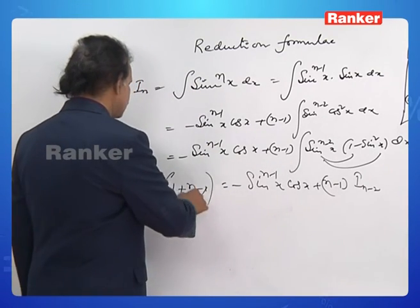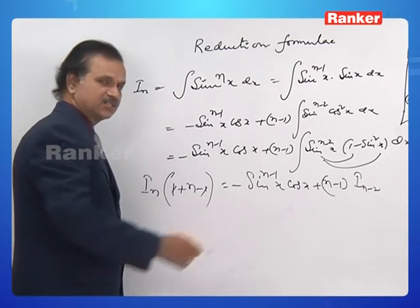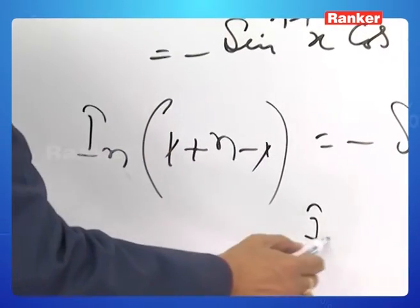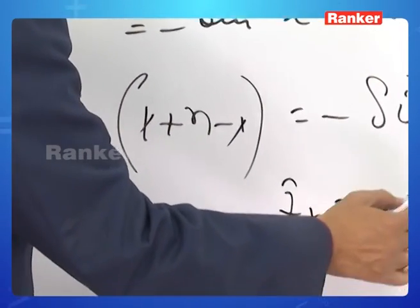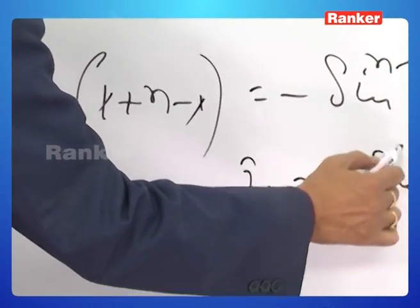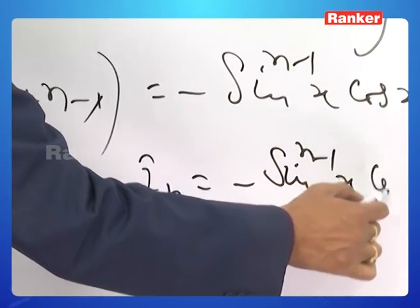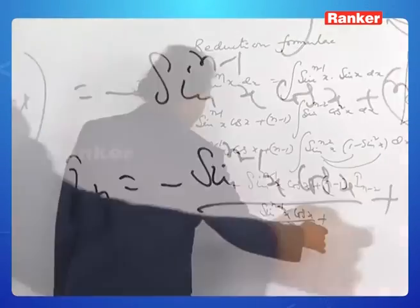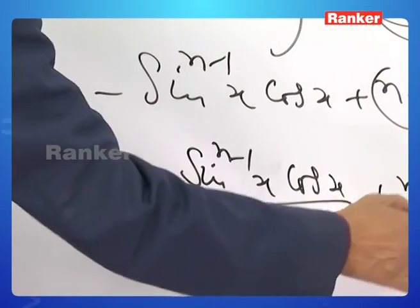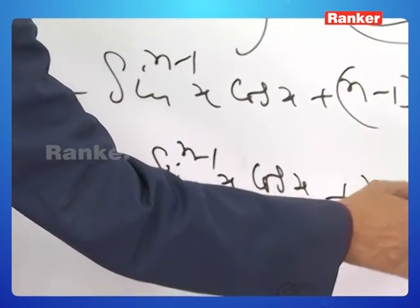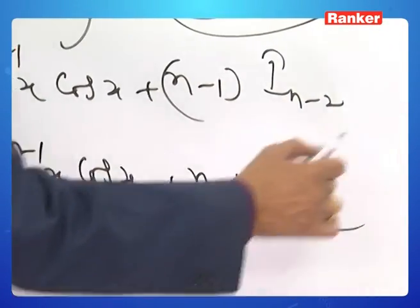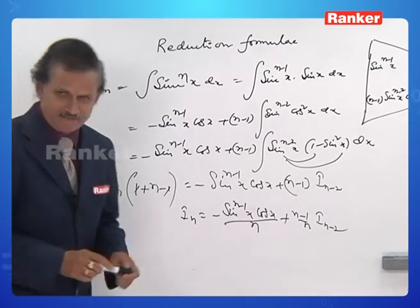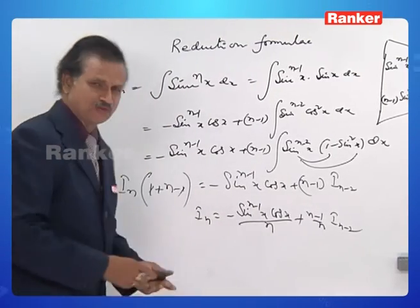Everybody knows n goes to that side. Therefore, I_n equals minus sin^(n-1)x·cos x divided by n, plus (n-1)/n into I_{n-2}. We could have used two to three steps of course — it is not difficult.